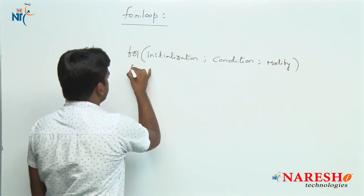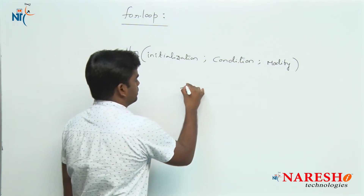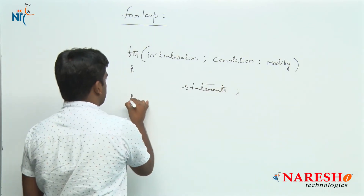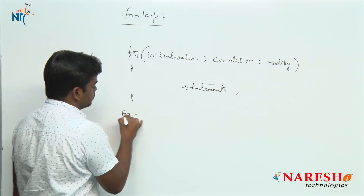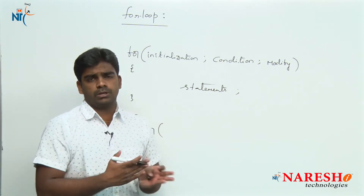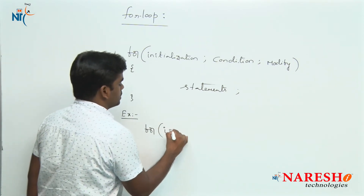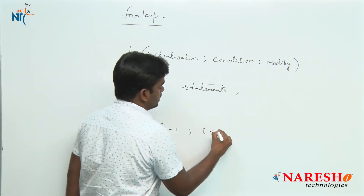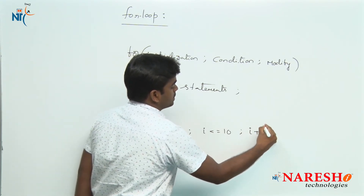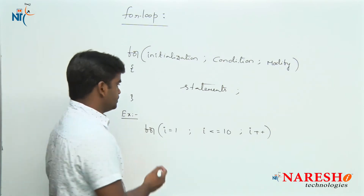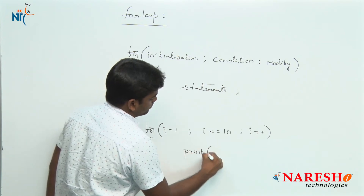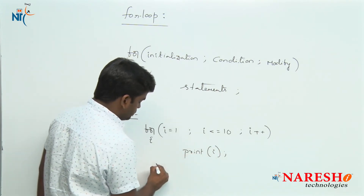Inside the loop go all the statements — what we want to execute if the condition is true. For example, suppose we want to print 1 to 10 numbers: i value starts with 1, i is less than or equal to 10 is the condition, i++ is the modify (increment or decrement), and inside we are printing the i value.